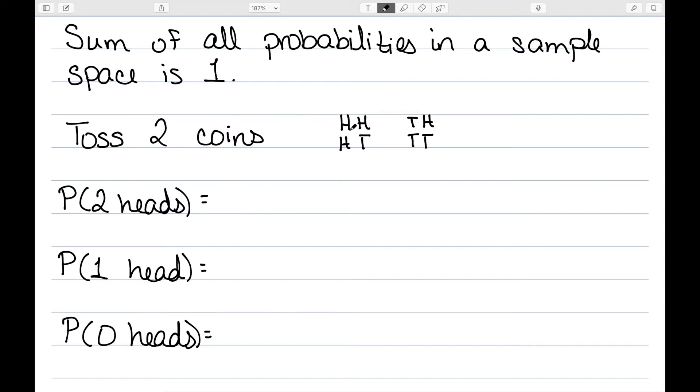So if I'm looking at two heads, there's one possible way to get two heads out of a total of four possible outcomes. For one head, there's two possible ways to do that, an HT or a TH, still four possible outcomes. And there's one way to get zero heads, which is to get two tails out of four possible outcomes. And we can see that if we add these three possibilities up, we get one.